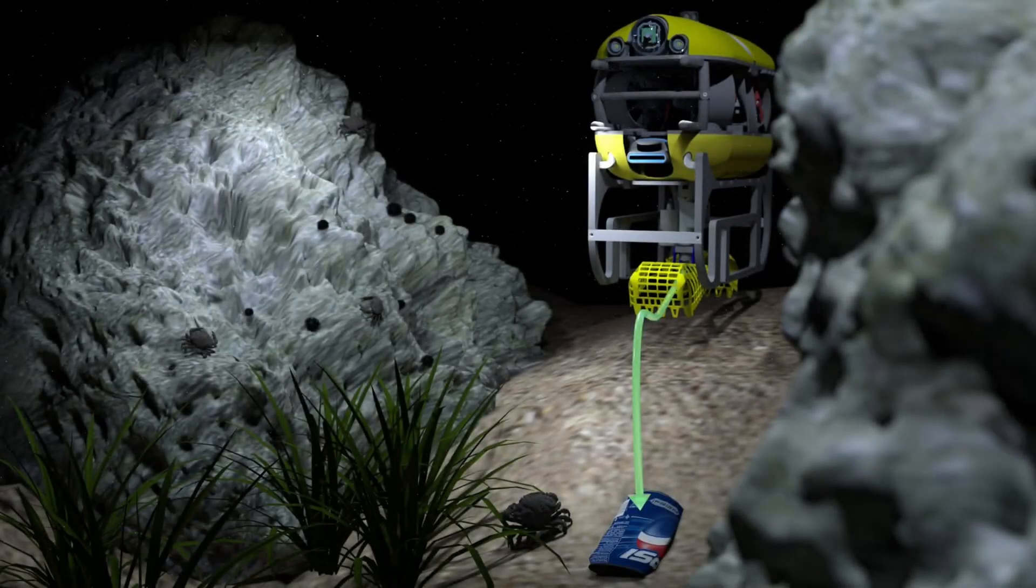Now that the trash has been identified and registered on the map, we can send the collection ROV for picking it up, as we can see in this illustration.